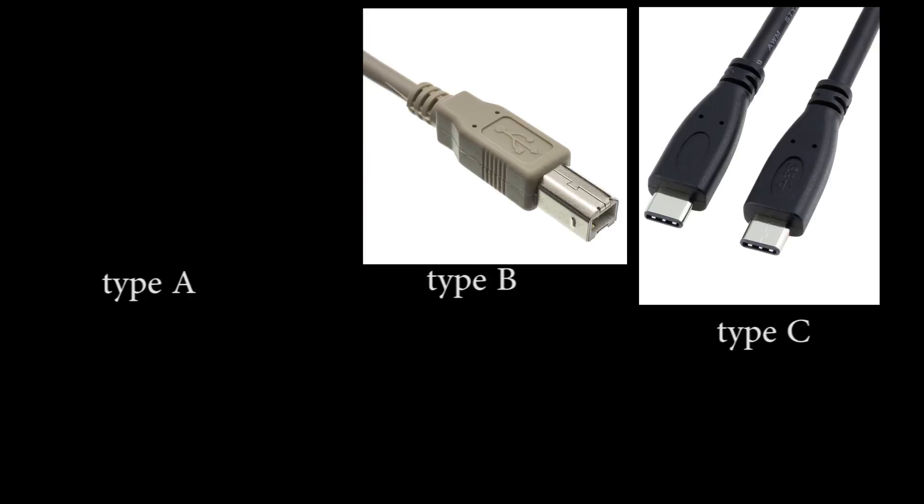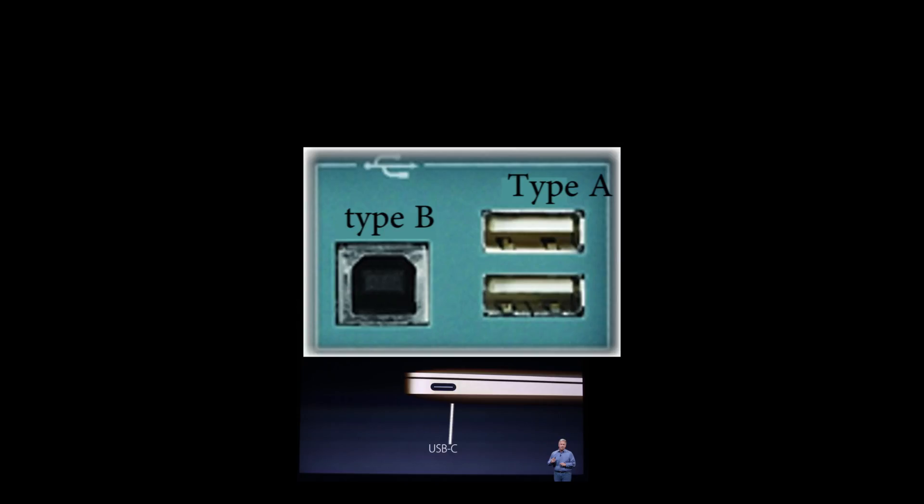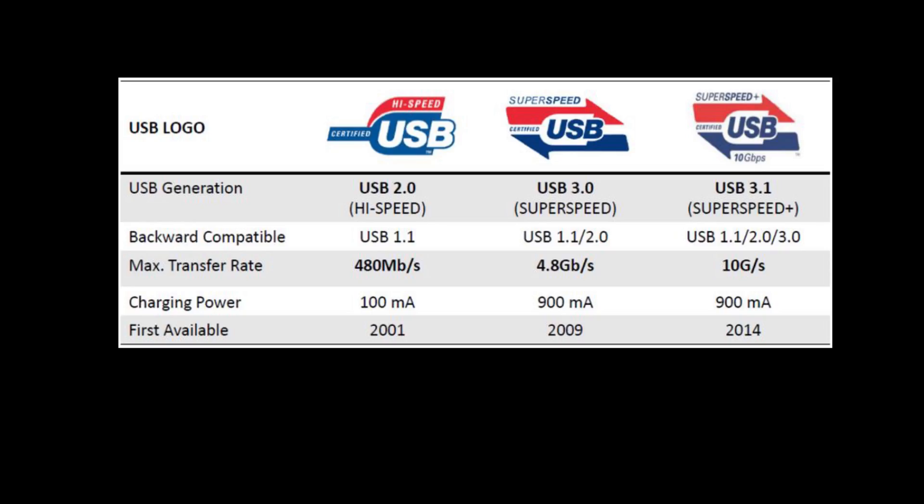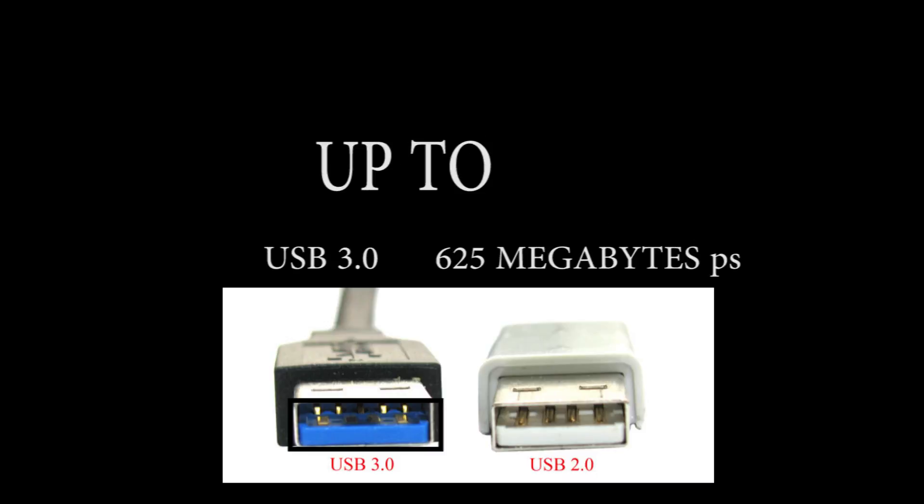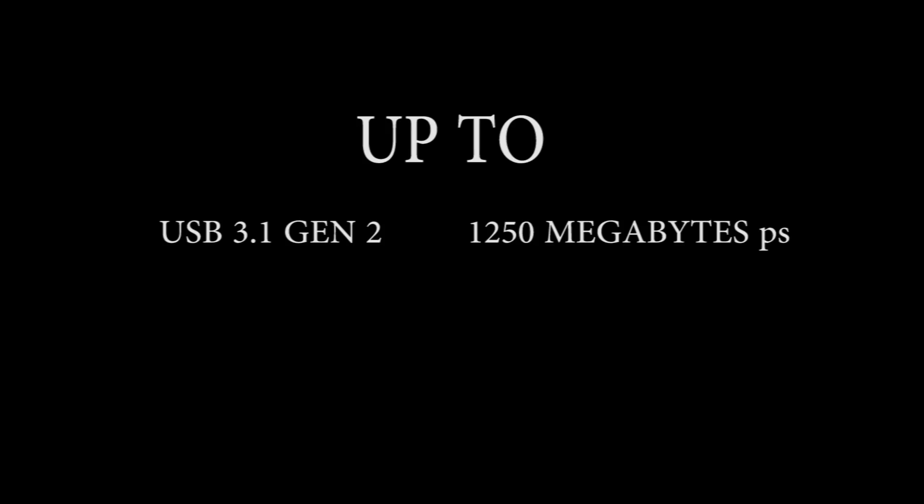And then of course we have the actual speed for data transfer. USB 1.1 is 12 megabits a second. USB 2.0 is 60 megabytes per second. USB 3.0, which is colored blue, is 625 megabytes per second. And USB 3.1 Gen 2 is 1250 megabytes per second.